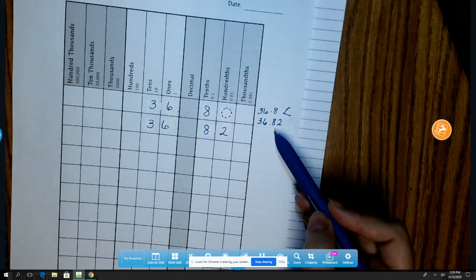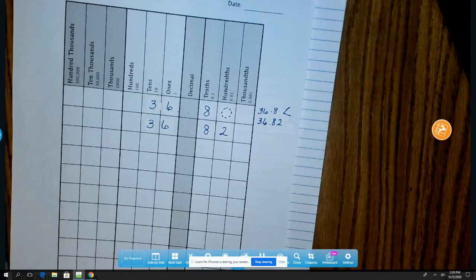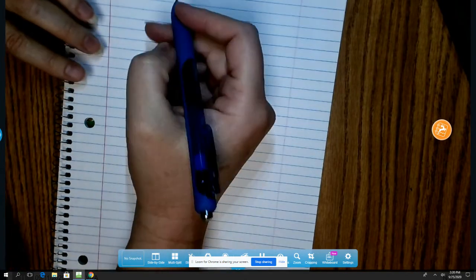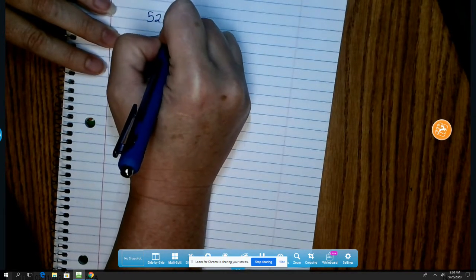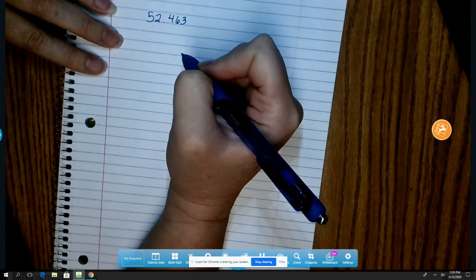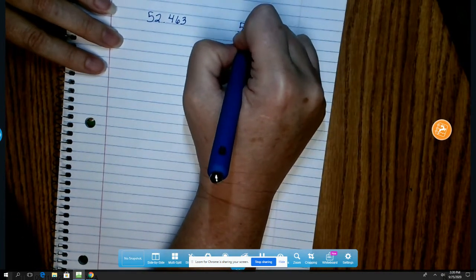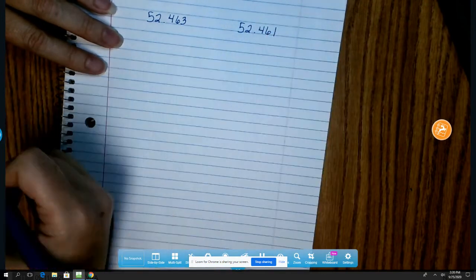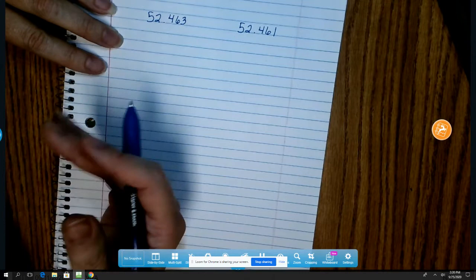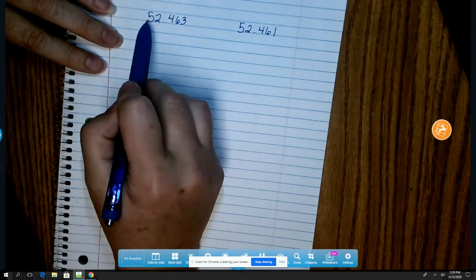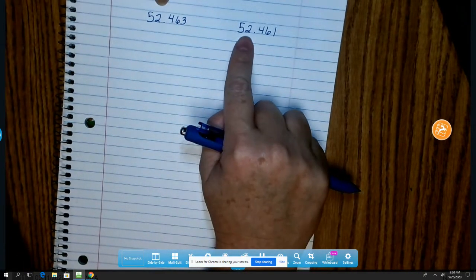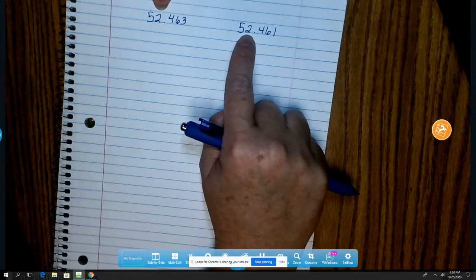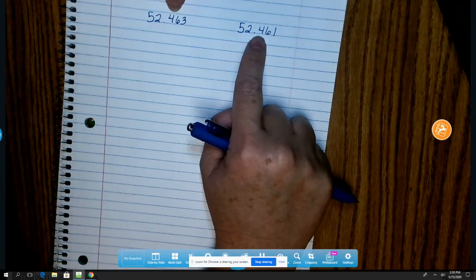So let's try another one without the place value chart. And let's compare 52,463 thousandths and 52,461 thousandths. So again, we're going to do just as we were doing before. Five and five, those are the same. So I'm going to look at my next ones. Two and two, those are the same. So I'm going to move to the next place value.